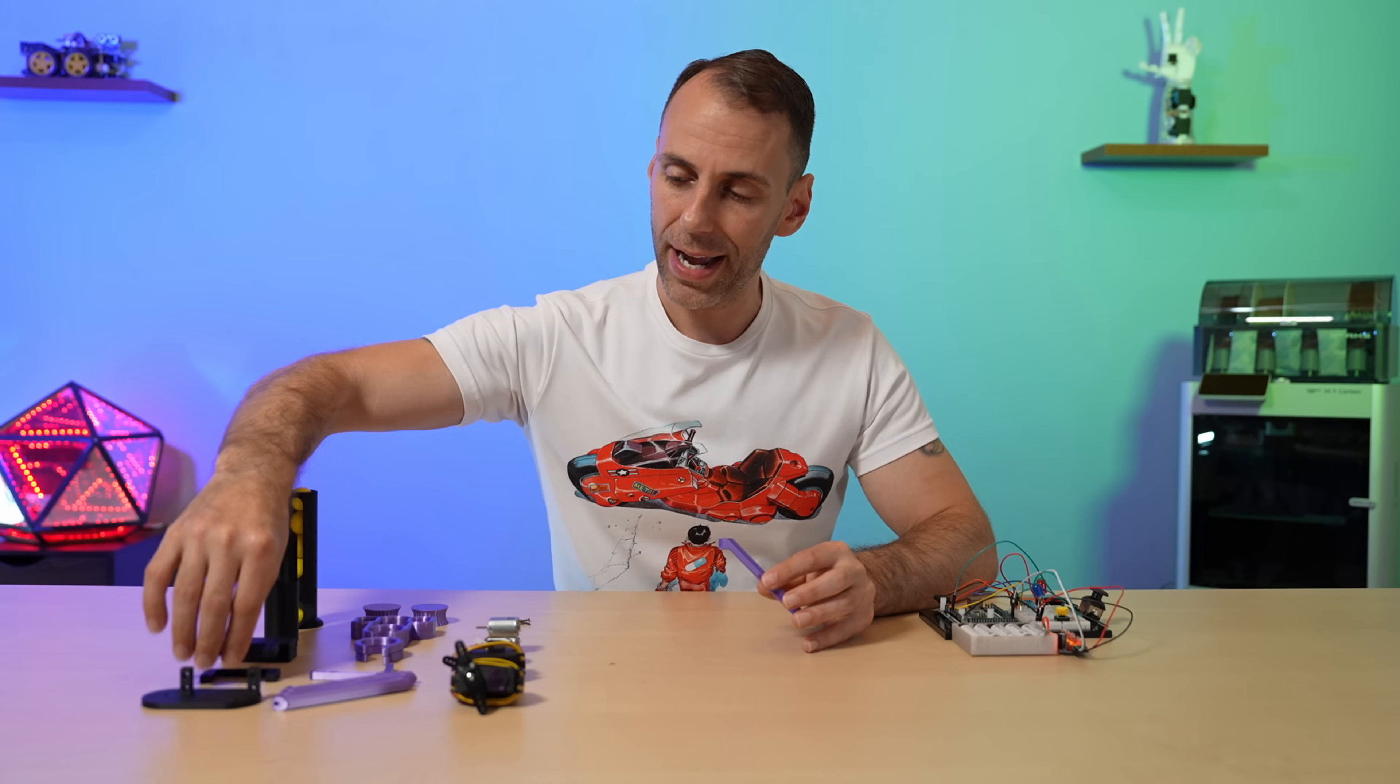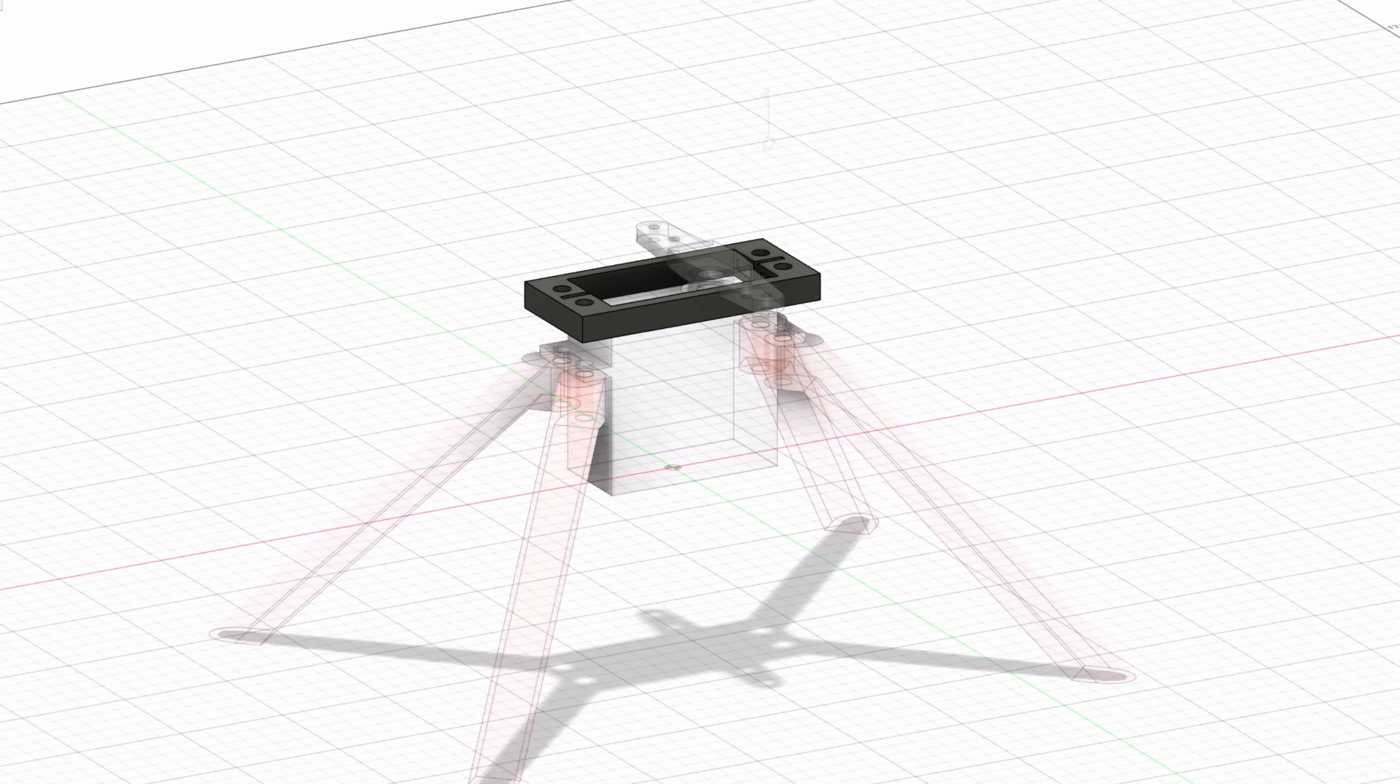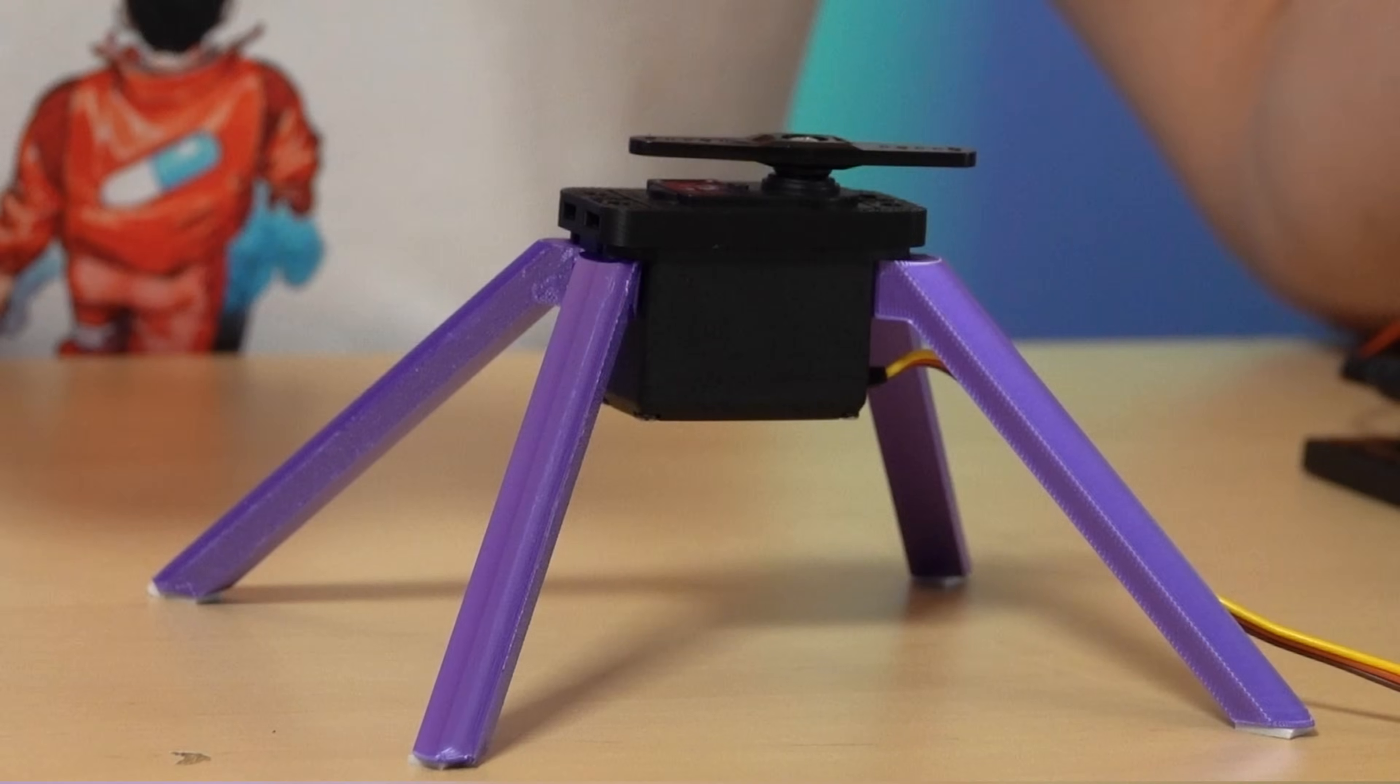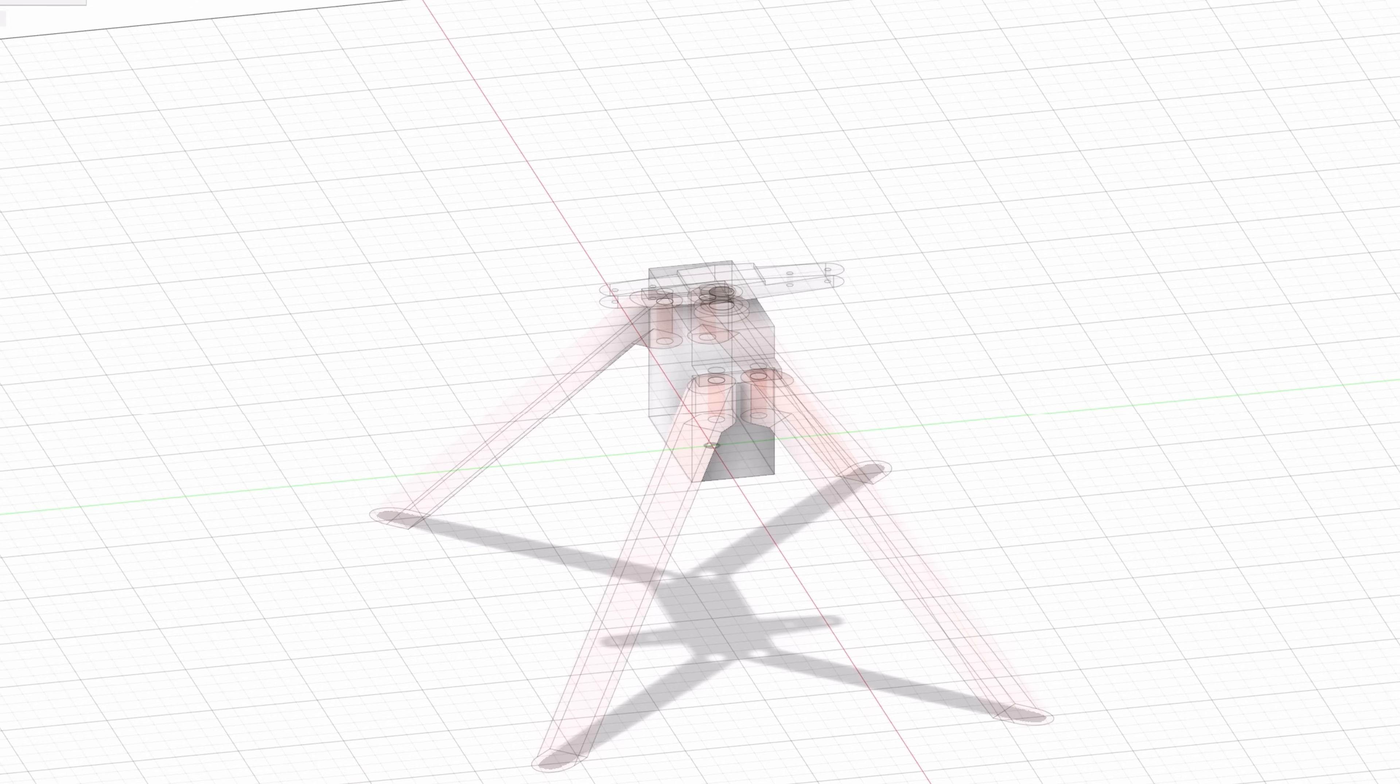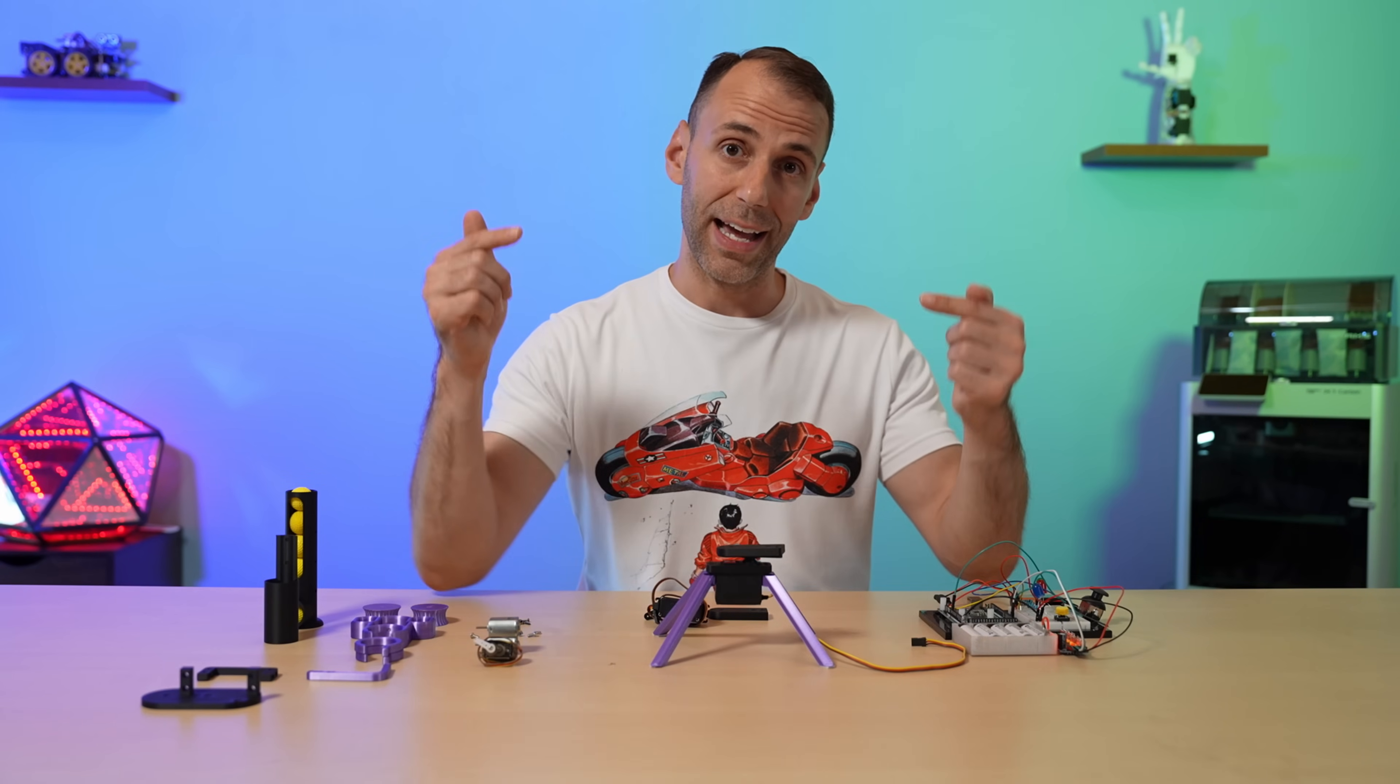I then created a bracket that will sit on top of the servo and I'm going to use a screw and a nut to join these pieces together. When they're all put together, it'll look like this. Then I 3D modeled these platforms and I'm going to attach the first servo and bring in a second servo to make a two axis gimbal that looks like this.